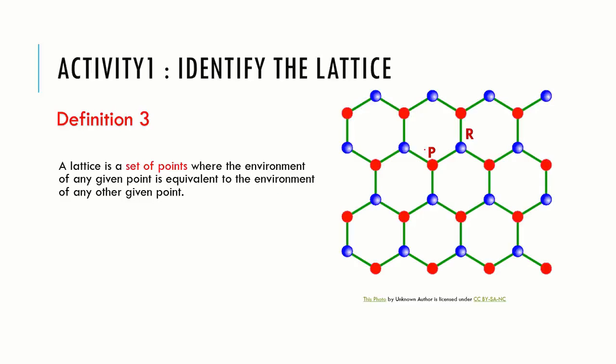To obtain the lattice point, first we have to identify the equivalent points in honeycomb. The set of red points shown here have similar surroundings. Two adjacent points are up and one adjacent point is down to each red point. So all red points are equivalent.